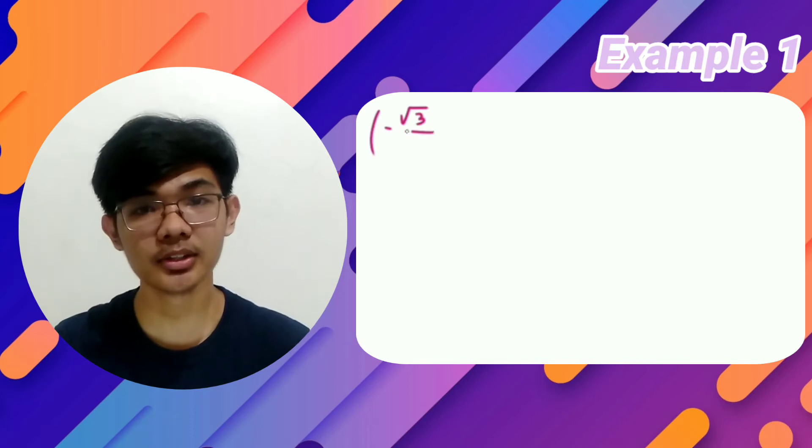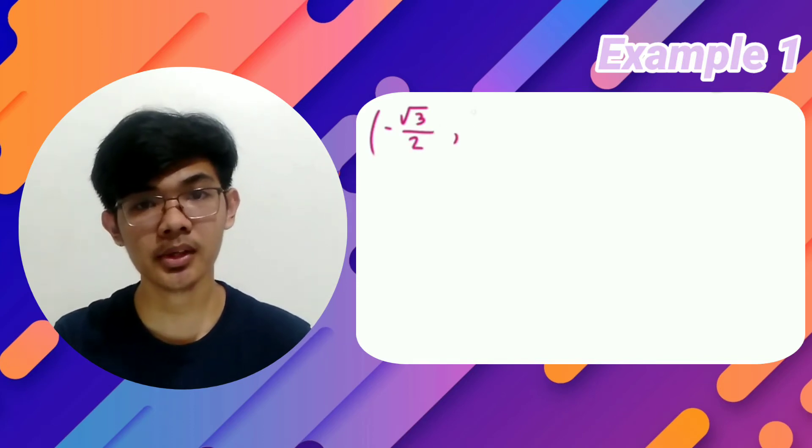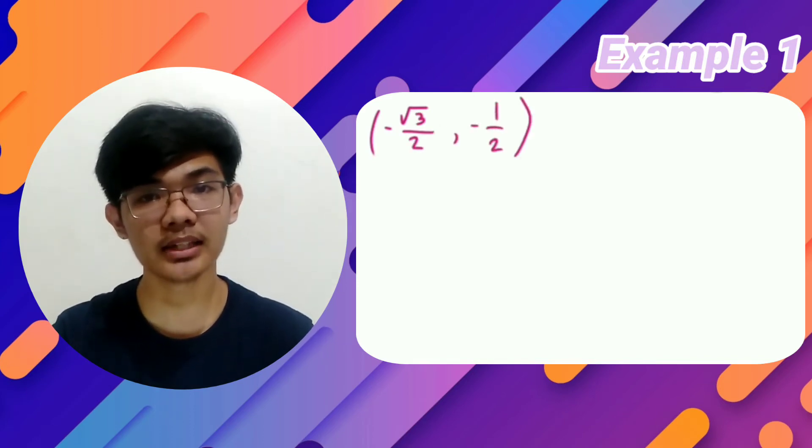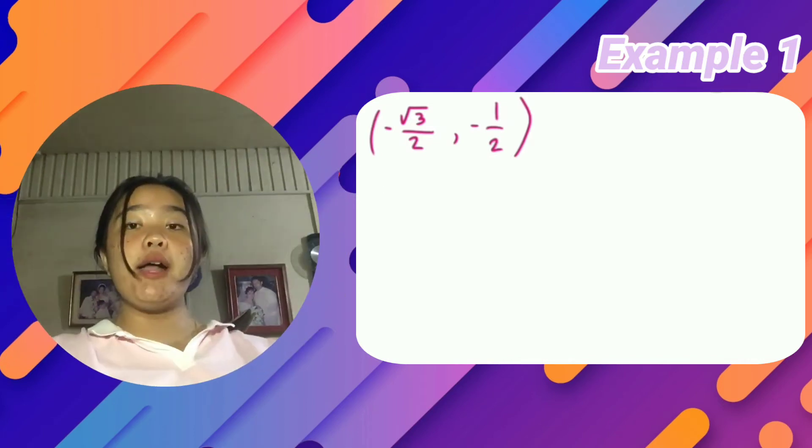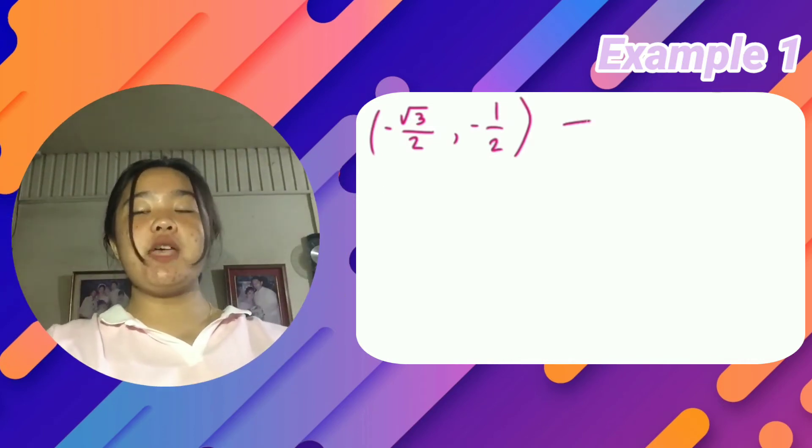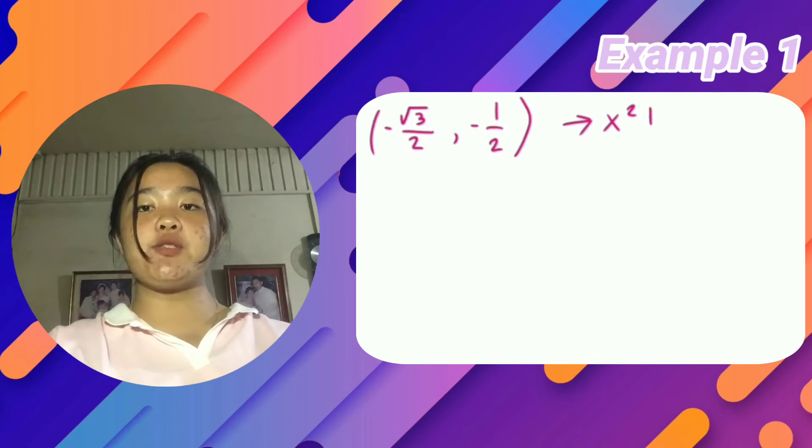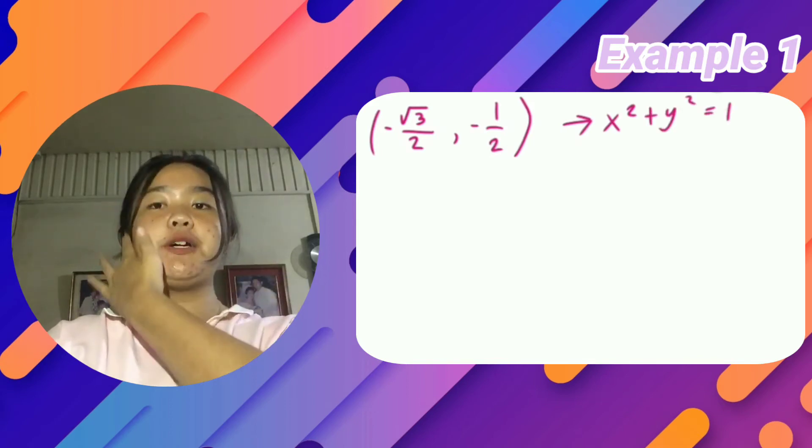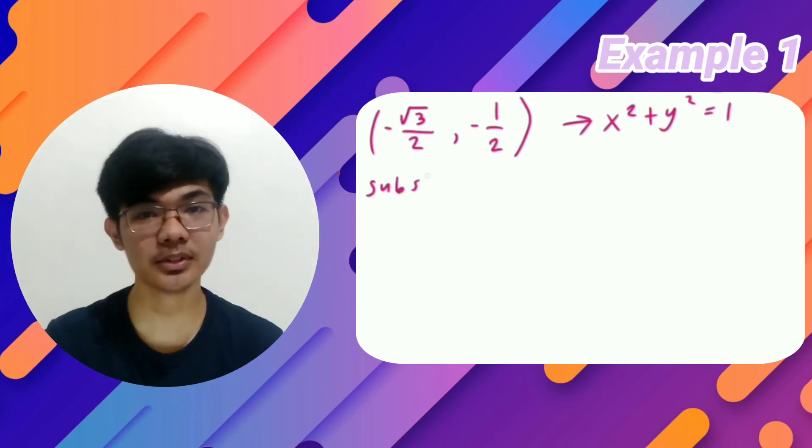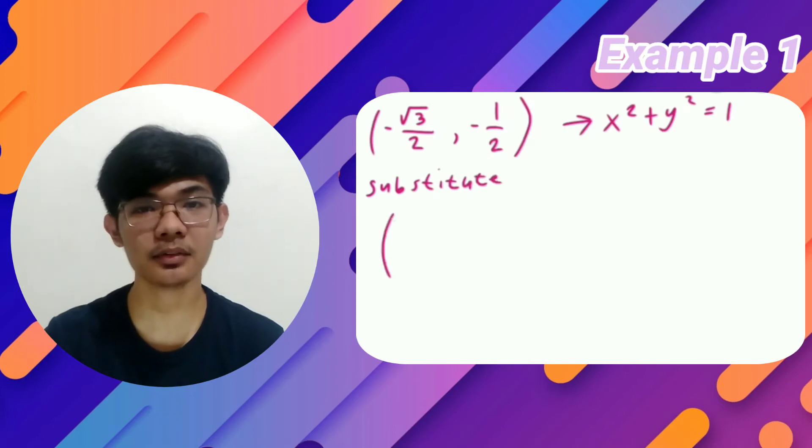How do we determine if the point (-√3/2, -1/2) lies on the unit circle? Well, Jasper, our first step would be remembering the equation x² + y² = 1. The next step would be substituting the x and y values into our formula.